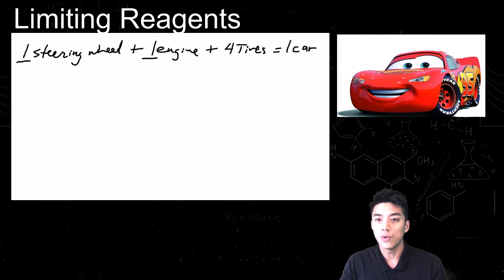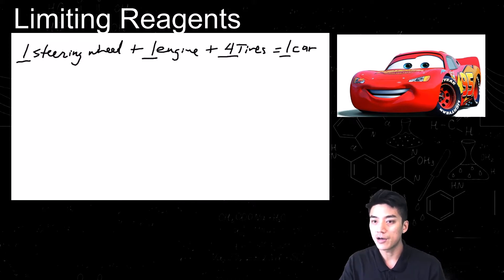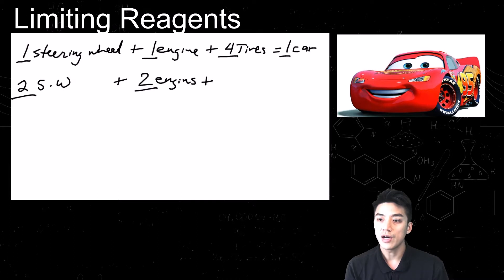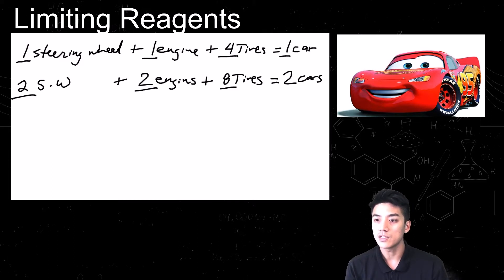Let's do another basic example: making a car. One steering wheel plus one engine plus four tires will give you one car. It's a crude example — I know there's much more that goes into a car, like the timing belt, the battery, the alternator, etc. But we'll go with this as the recipe to make a car. So now let's say we have two steering wheels, two engines, and eight tires. All I did was double the starting amount, and it's obvious that we can create two cars from this.